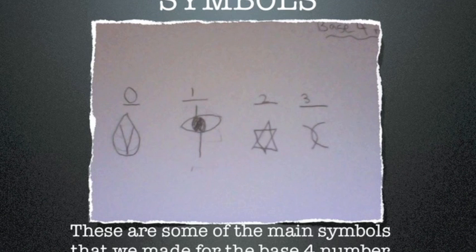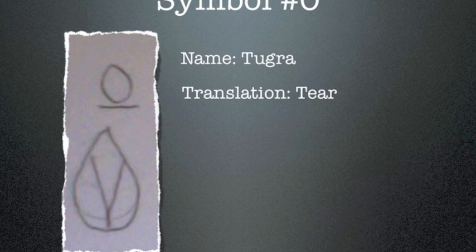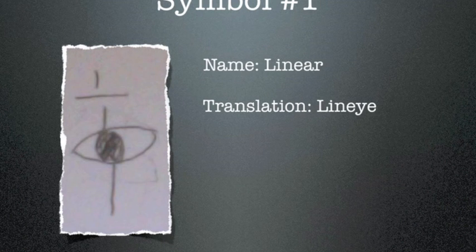Symbols. These are some of the main symbols in the base-four number system. Symbol zero: name Tugra, translation 'tier.' Symbol one: name Linear, translation 'line.'